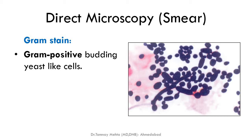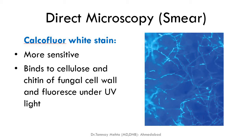The second type of direct microscopy is smear examination, where we make a smear, heat-fix it, and stain it to visualize the fungus. The most common stain is Gram staining — Gram-positive budding yeast-like cells are easily seen if yeast is present. The second smear stain is calcofluor white stain, which is more sensitive. It binds to cellulose and chitin of the fungal cell wall and fluoresces under UV light, requiring a fluorescent microscope.